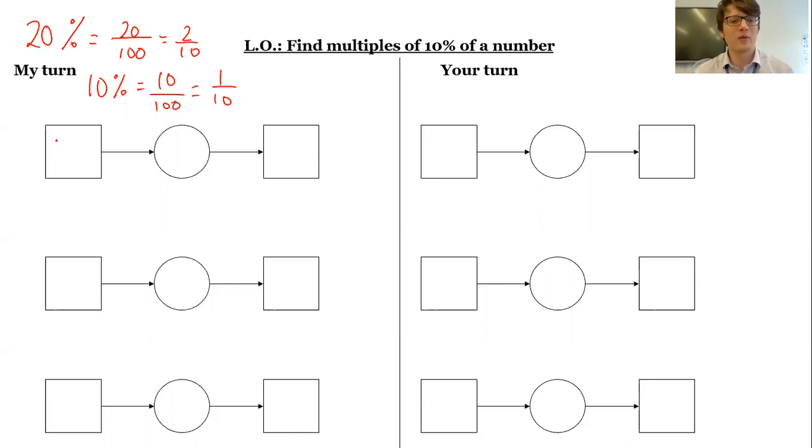So let's say we want to find 20% of 40. First step then, I need to find 1 tenth. So I'm going to divide by the denominator, divide by 10, which gives me 4. So that is 10%. But I don't want 10%, I want 20%. So I need to times my answer by 2 to give me 2 tenths. 4 times 2 is 8. So 20% of 40 is 8.